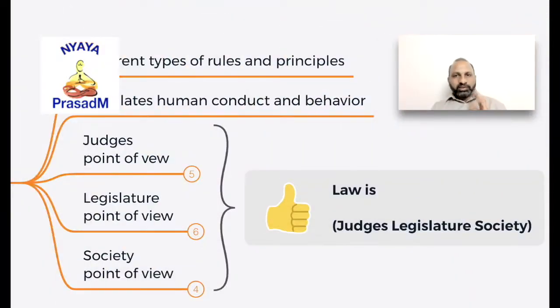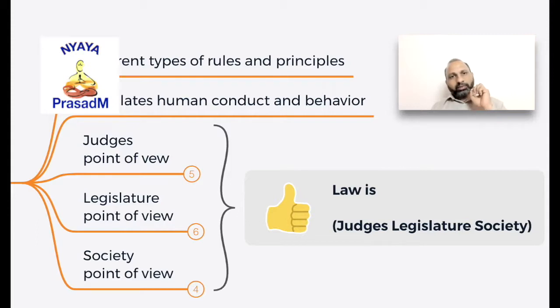The different key people are: it can be judges, or it can be from a legislature point of view, or it can be from a society point of view. The simplest way to remember the function and purpose of law is with a simple mnemonic. For the purpose of remembering things, we can make some tricky, funny statements. One such statement could be: 'Law is Judges, Legislature, Society.' Remember this sentence — Law is Judges, Legislature, Society — that defines the point of view of all key people from a judicial perspective.